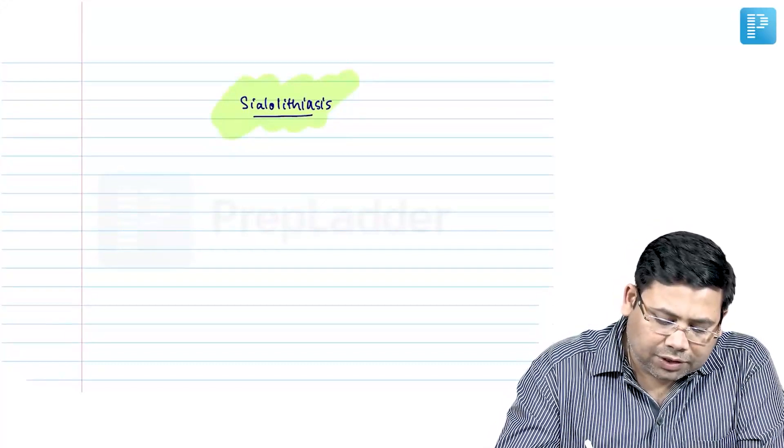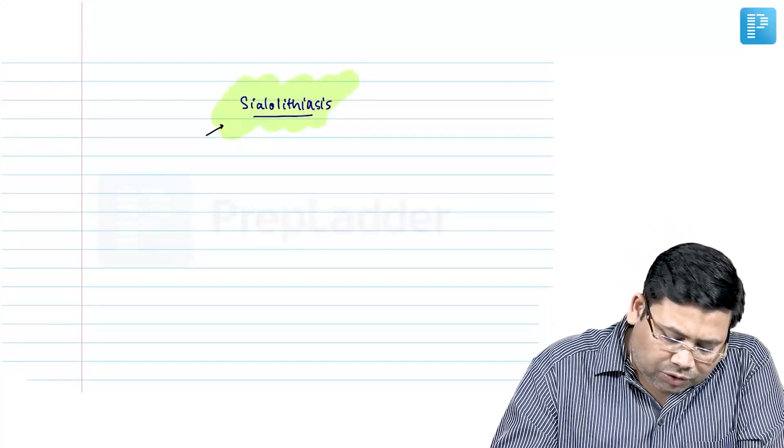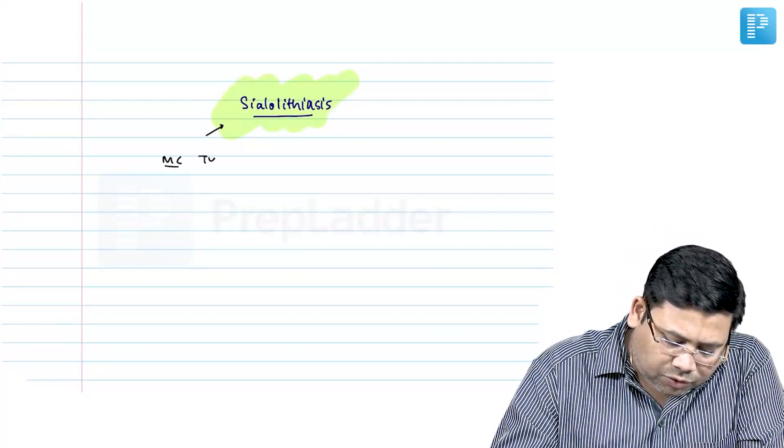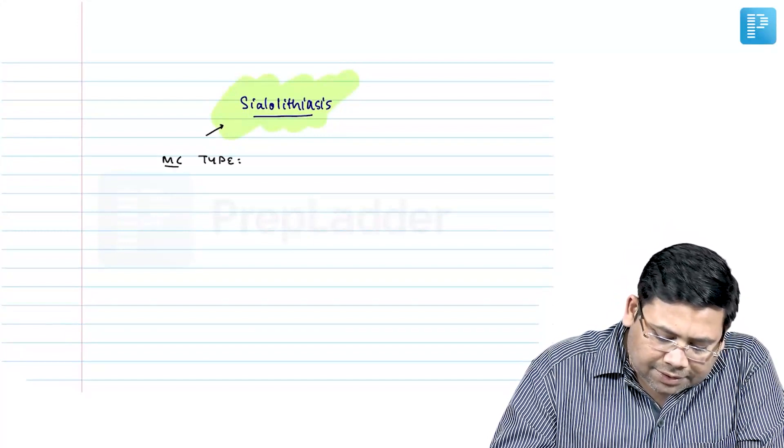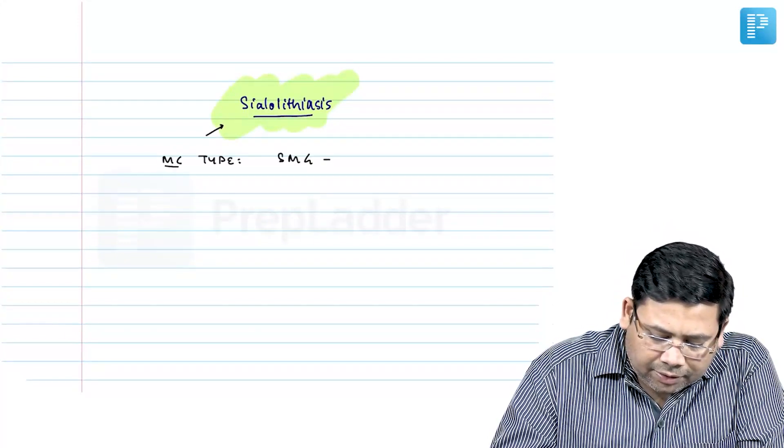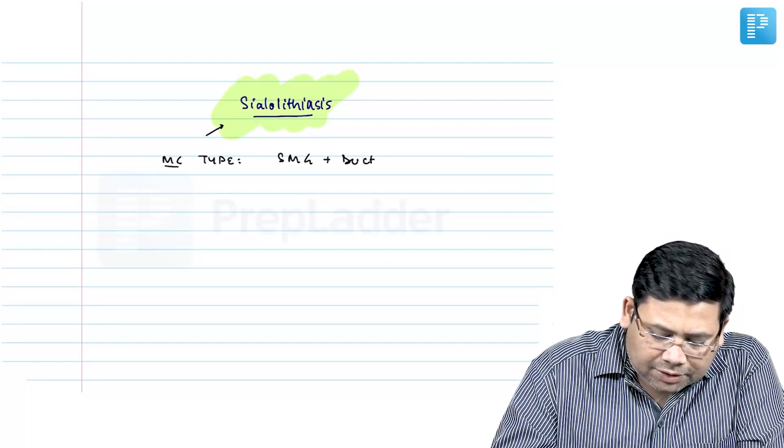Five important points that I am going to discuss on sialolithiasis. The most common type - it's submandibular gland plus Wharton's duct stones.